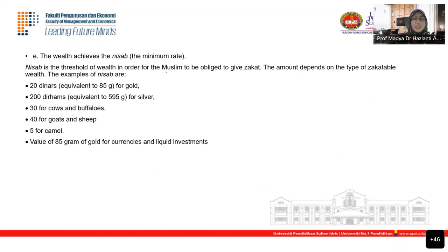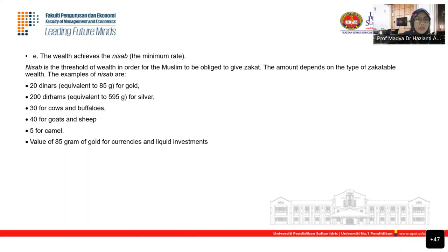For example, the nisab for gold is 85 grams — anything more than 85 grams is zakatable. For silver it's 595 grams, cows and buffalo more than 30, goats and sheep more than 40, camels more than 5. For liquid investments like shares, savings, ASB, and Tabung Haji, we use the equivalent value of 85 grams of gold. All currencies and liquid investments use the value of 85 grams of gold as the nisab benchmark.